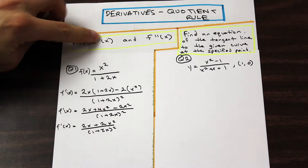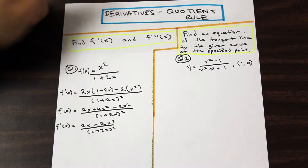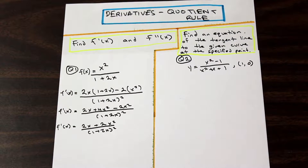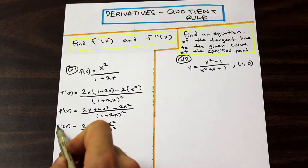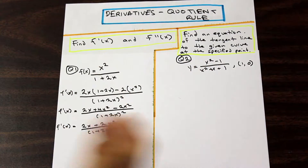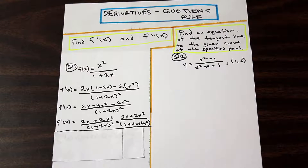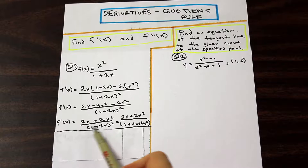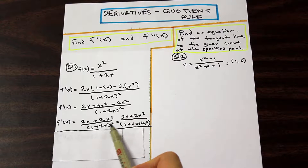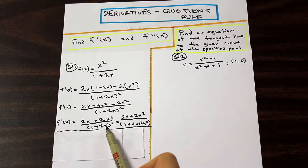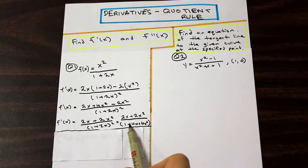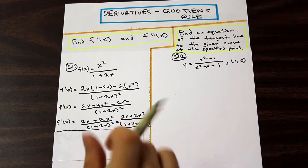The question is asking us for f double prime of x, so we've only done half the question. To find f double prime of x, we take f prime of x and find the derivative of it once more. We apply the quotient rule to this function. We've gone ahead and expanded the bottom, which is going to help us because taking the derivative of (1 plus 2x) squared would require chain rule — and we haven't learned that yet — so we expand and differentiate step by step.